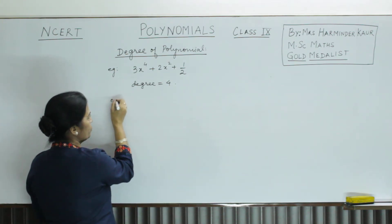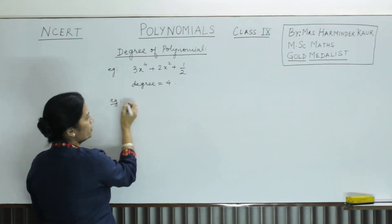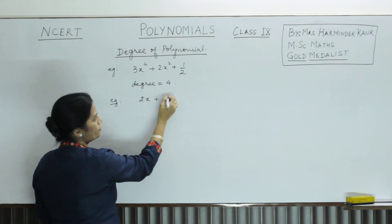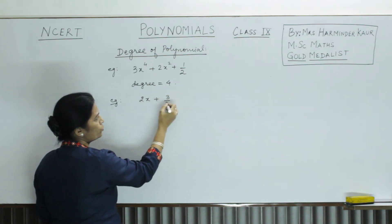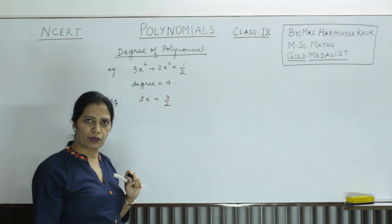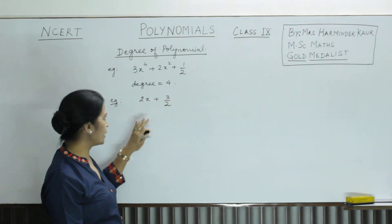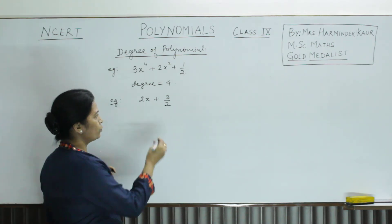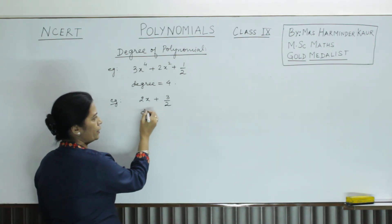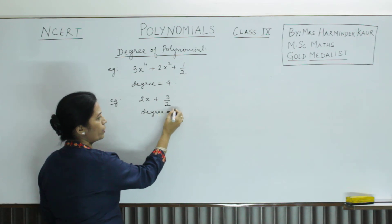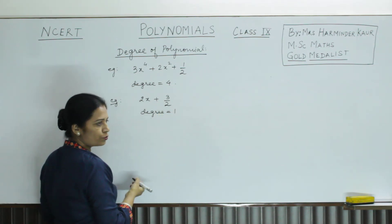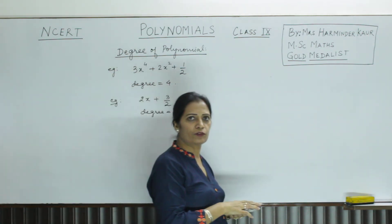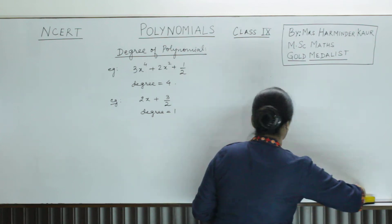Got it? Next example — suppose it is given 2x plus 3 by 2. What is the highest power here? The highest power of the variable is 1. So we say degree is 1. This is how we define the degree of the polynomial.